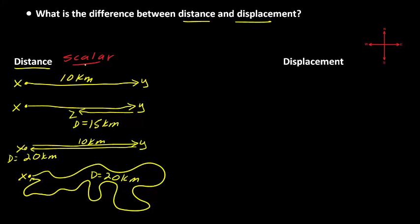Remember that distance is a scalar measurement because it has a quantity and a unit of measurement — that's all it has. Distance is the total length of the path traveled from the origin to the ending point, and it is a scalar measurement.